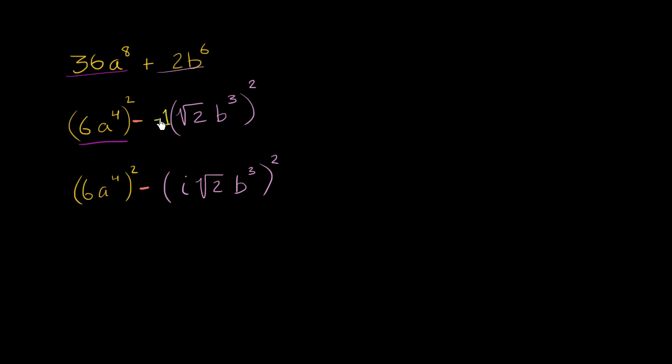Notice, i squared is negative 1, square root of 2 squared is 2, b to the third squared is b to the sixth power. If I raise something to an exponent and then raise it to another exponent, I multiply the two exponents.